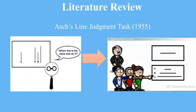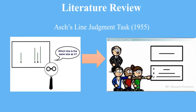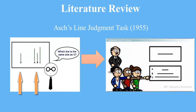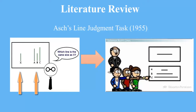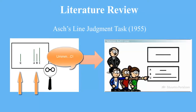In his line judgment task, Solomon Asch demonstrated that the normative desire to be accepted propels social influence. Asch prompted participants to select lines matching in length and then share answers with one another. Although only one set of lines blatantly matched, participants were willing to change their answers in order to fit into the group and avoid ridicule.